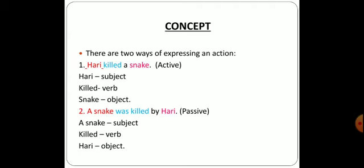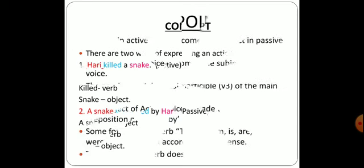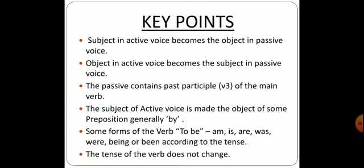The tense is not supposed to be changed — tense will remain as it is. The first sentence 'killed' is past tense, and in the second sentence 'was killed' is also past tense only. This is not direct-indirect where we are supposed to change tenses. In active passive, whatever tense is given to you, you are supposed to change in that very same tense only. Now let us move ahead and go through the key points — the points you are supposed to remember whenever you are changing from active to passive.